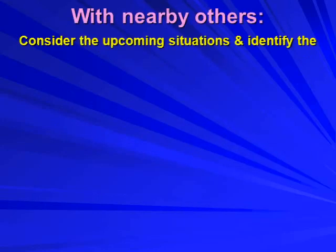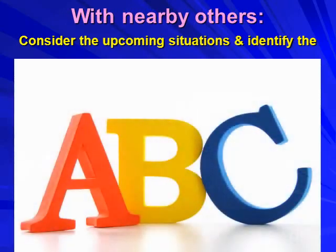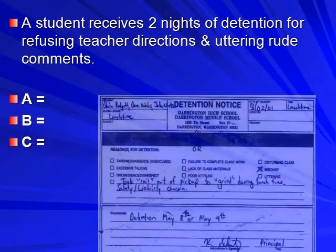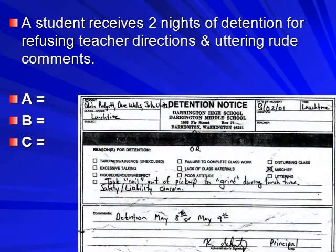Here's your task — grab someone nearby to help if available, and activate your brain cells. A student gets two nights of detention for refusing teacher directions and uttering some rude comments to the teacher. What's the antecedent? The teacher gave a direction. The student's behavior? Refused that direction and uttered rude comments. The consequence? Received two nights' detention. Why would two nights' detention be maintaining or strengthening a behavior?